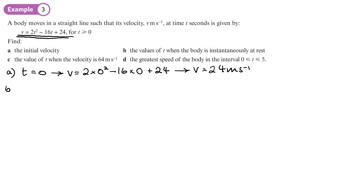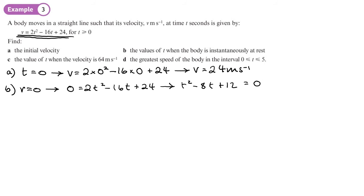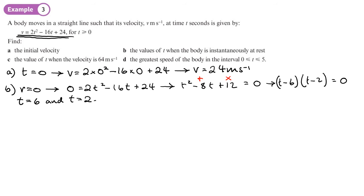Part b: find the values of t when the body is instantaneously at rest. At rest means v = 0, so we set 2t² - 16t + 24 = 0. Dividing by 2: t² - 8t + 12 = 0. Factorising: (t - 6)(t - 2) = 0, giving t = 6 and t = 2. So the body stops momentarily at 2 seconds and 6 seconds.